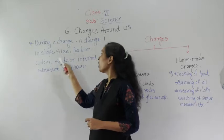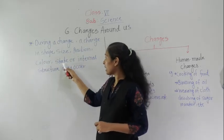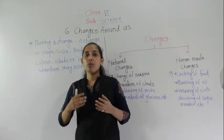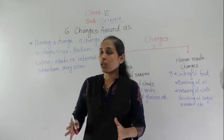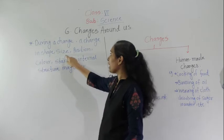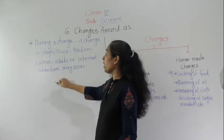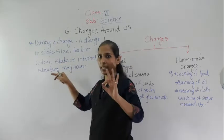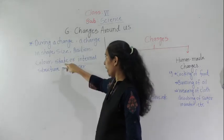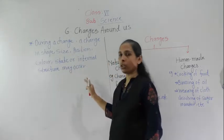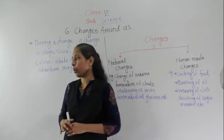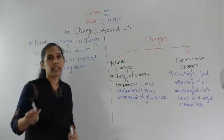A change in shape, size, position, color, state, or internal structure may occur. We can say that a change occurs if there is a change in shape, a change in size, a change in position, a change in color, or a change in state. There are three states — solid, liquid, and gas — which we will see in the next point. Or if there is a change in internal structure, that is also called a change.